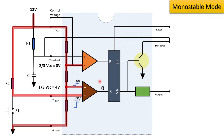In the case of the threshold comparator, the inverting terminal is at 8V reference. The output depends upon the voltage at the non-inverting terminal. Assuming Q and Q-bar are 0 and 1, this activates the discharge transistor, resulting in ideally 0V at the non-inverting terminal of the threshold comparator. This results in less voltage at the positive terminal and more at the negative terminal, giving 0 at the output of the threshold comparator.